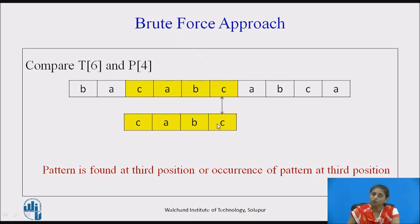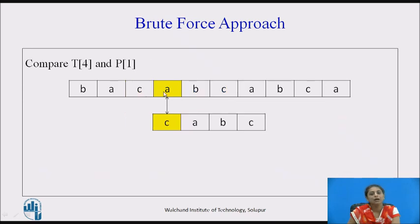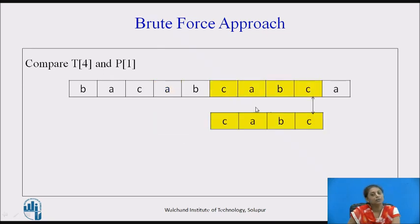This is the first occurrence; we need to find all occurrences of the pattern. After finding it at position 3, we start again from the fourth position because there can be overlap. There is a mismatch at that position, so we shift the window. In that way we find the second occurrence of the pattern, continuing until the end of the text. This is the brute force approach.